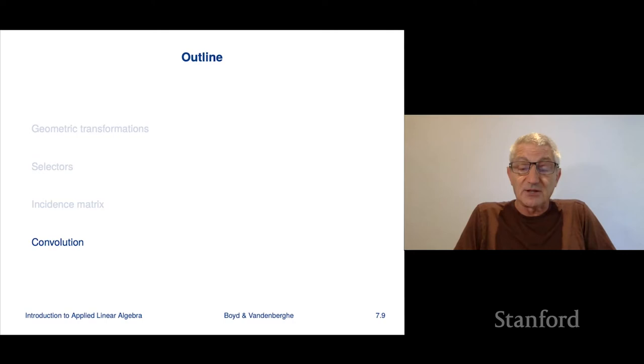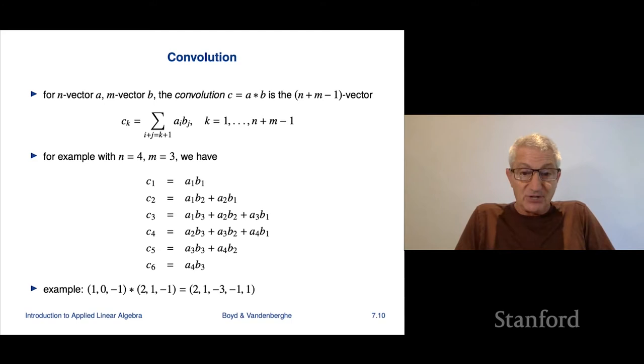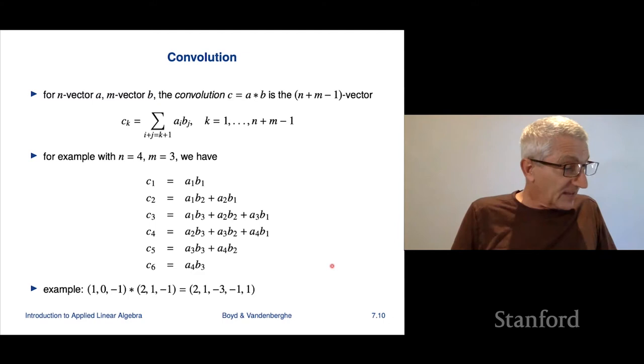Our next topic is convolution. It's something you may have seen in other courses as well, or will see in other courses. For example, it comes up in probability, it comes up in signal processing, bunch of areas. So it's actually something very good to know about. And this is, I should say, this is completely standard mathematical notation. It comes up in lots and lots of different areas.